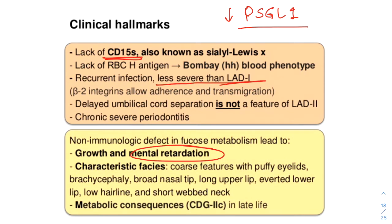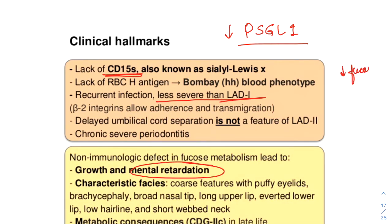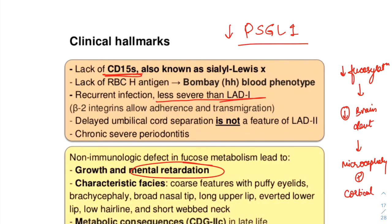Fucosylation typically affects brain development. A decrease in fucosylation leads to decreased brain development, which leads to microcephaly plus cortical atrophy, which leads to severe psychomotor and mental retardation. The patient is not able to move in a particular direction, not able to sit or walk, and there will be severe speech development delay.